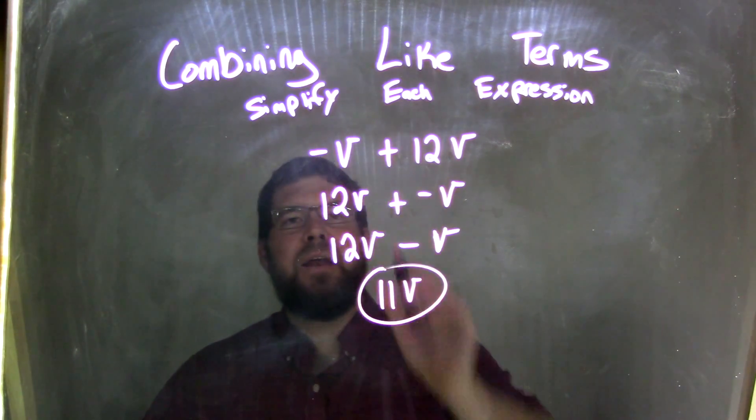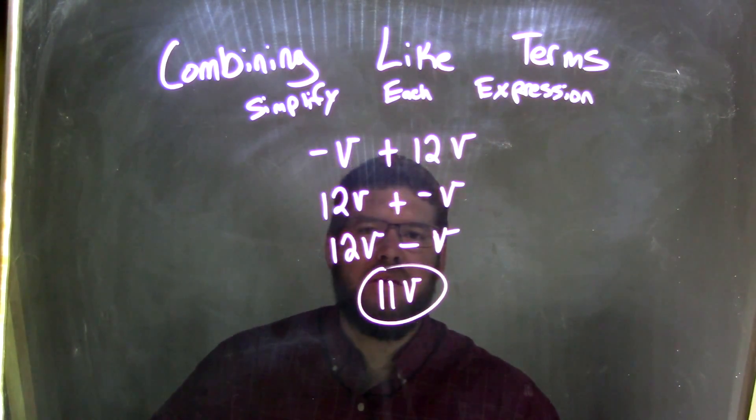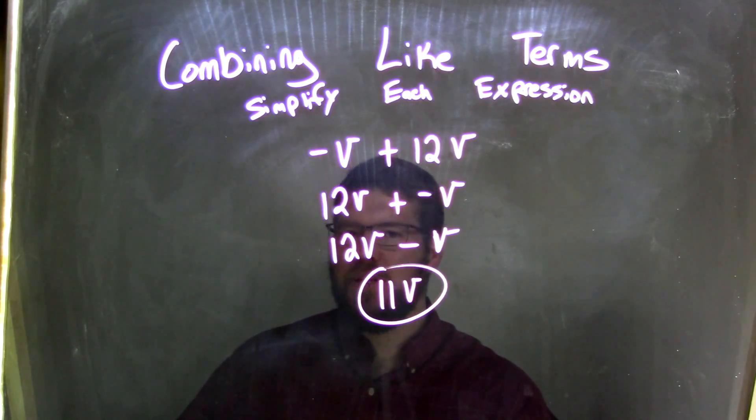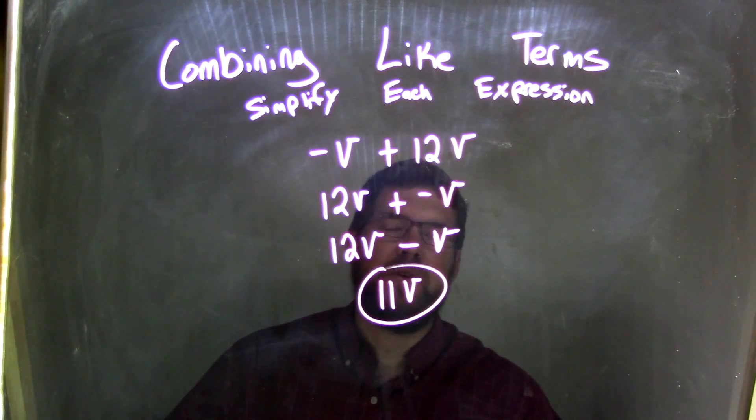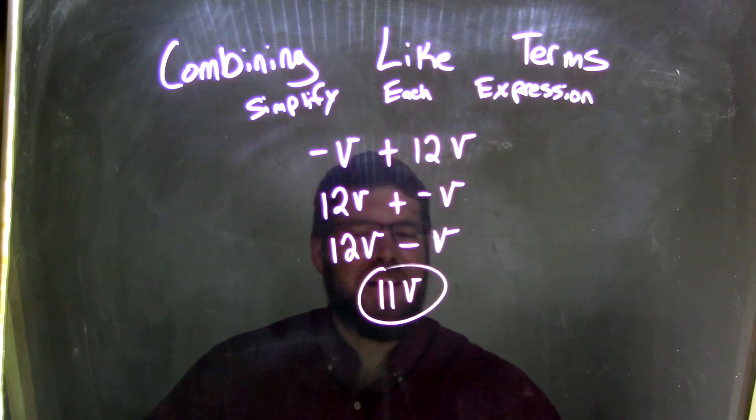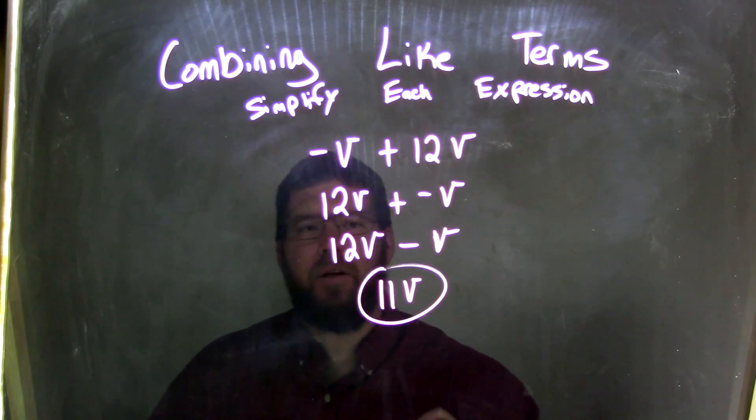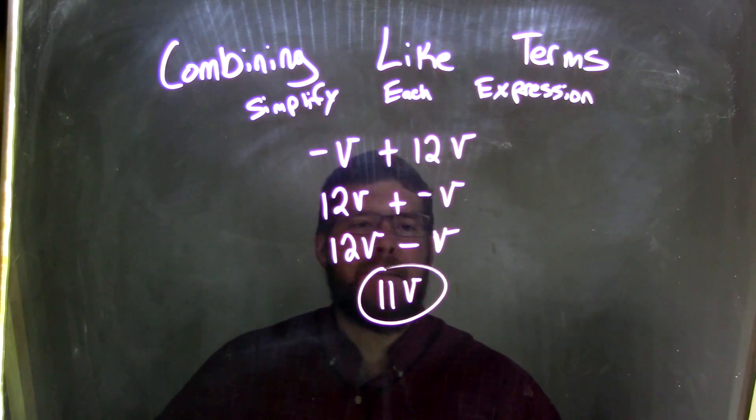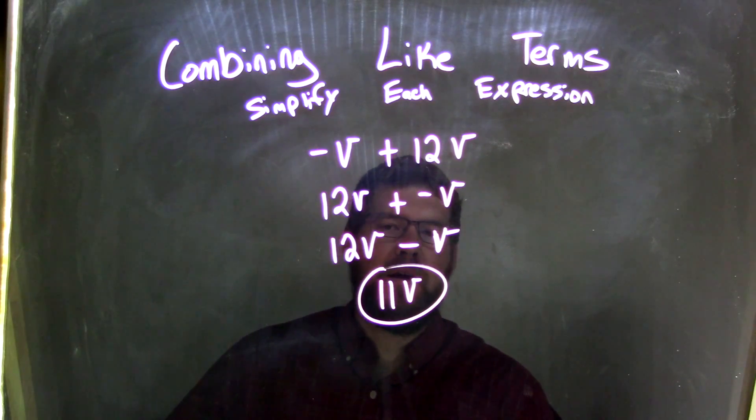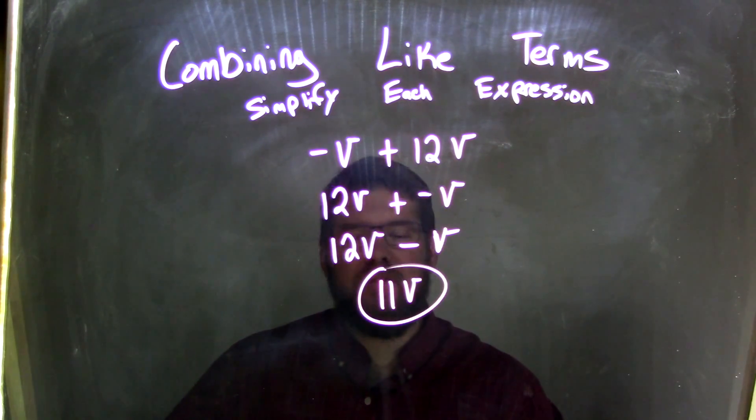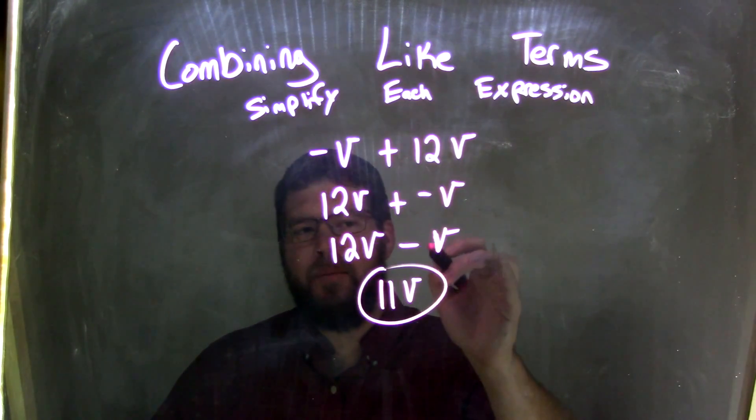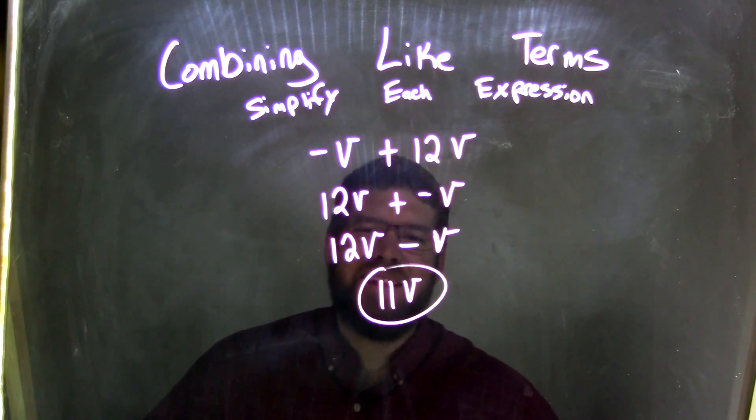So again, let's recap. Negative V plus 12V. We use the commutative property to rearrange that to be 12V plus a negative V. Now, we know that adding a negative is the same thing as subtraction here on our third step. So 12V minus V is what we write. And now that's easy for us to solve. 12V minus 1V, there's an imaginary 1 in front of that V, is 11V.